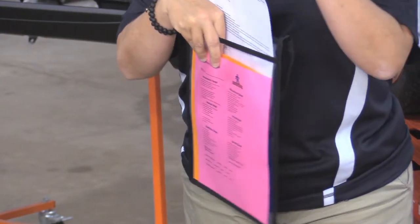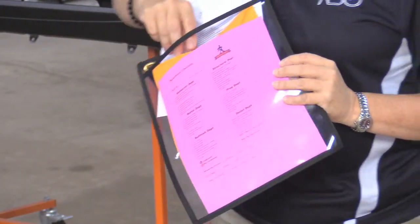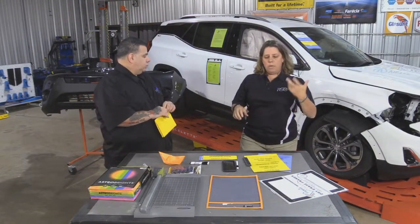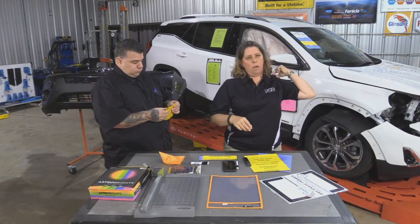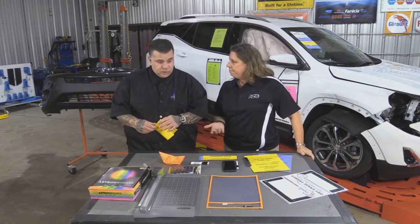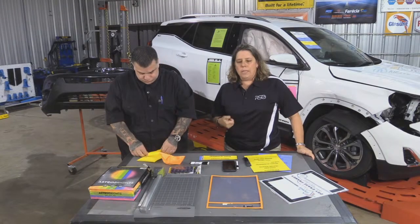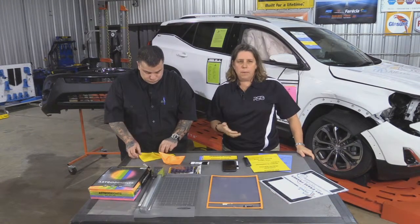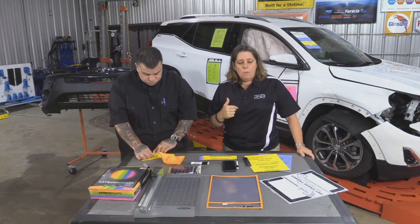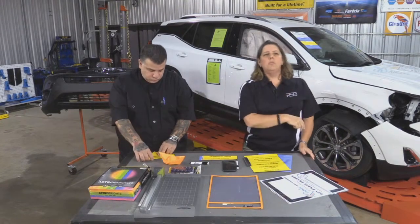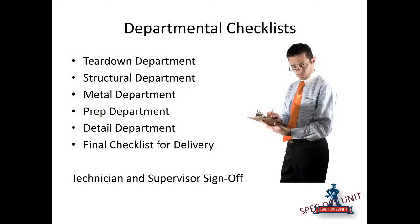We build our departmental QC sheets in Excel because we're constantly modifying them. Pre-printed things you can buy through different body shop stores are somebody else's idea of what your QC should look like, and it's not always perfect. I don't know how many times people call me and say, 'I like this but I wish I could make modifications.' That's what this system is — I think we've changed it probably six times in the last two years. We added a whole new section for repair diagnostics QC.